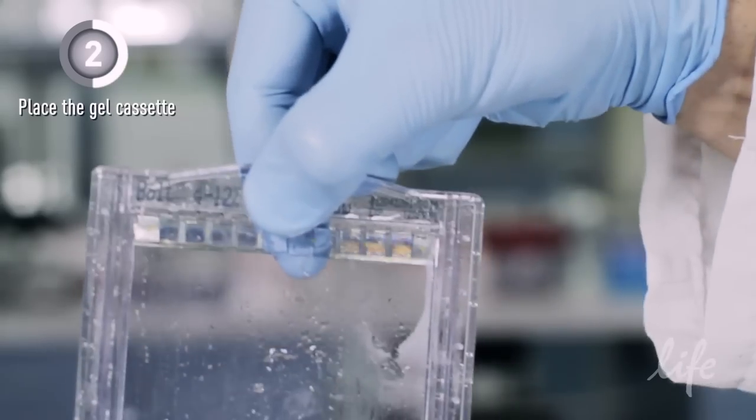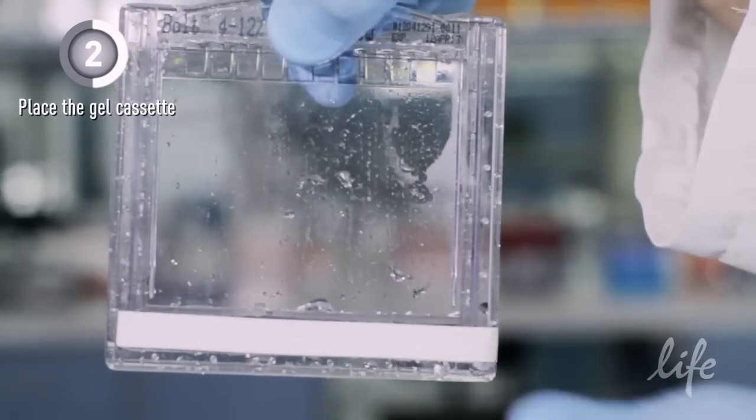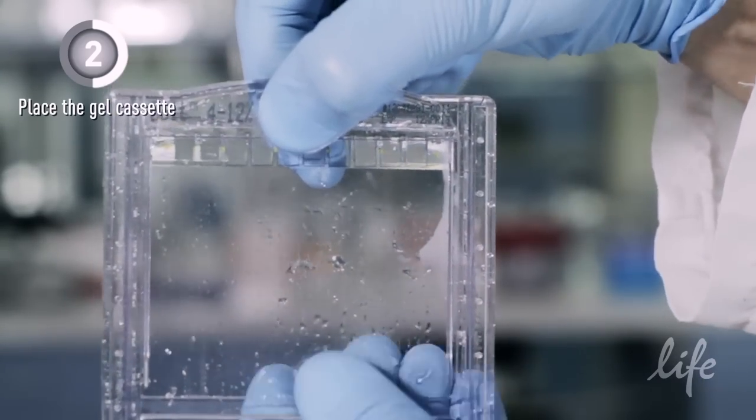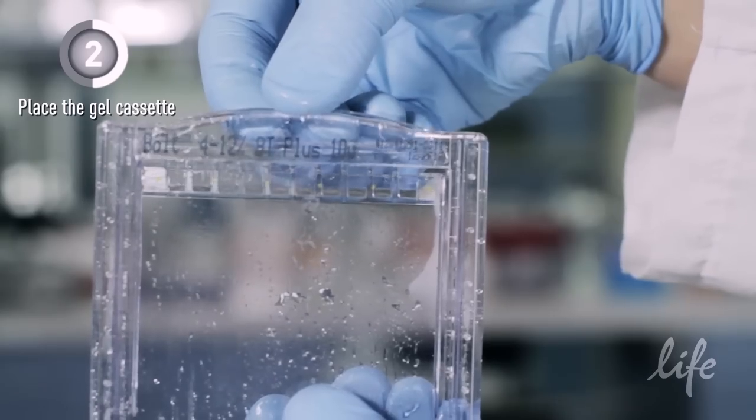Next, remove the gel cassette from the plastic pouch. Remove the tape at the bottom of the gel cassette, and then remove the comb by sliding it one side at a time.